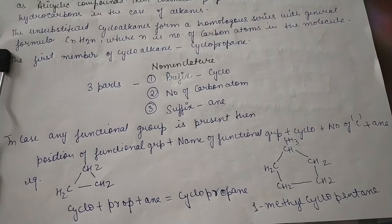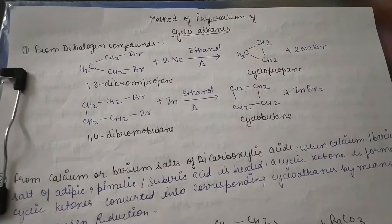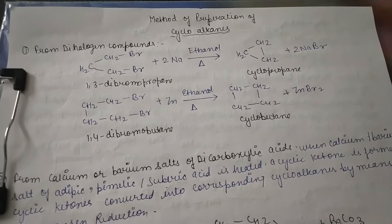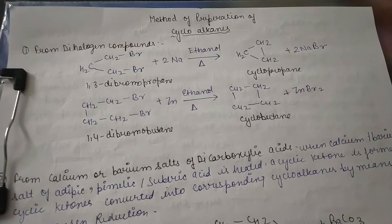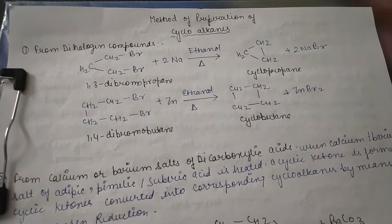In this way we can do nomenclature for various cycloalkane derivatives. Let's see the method of preparation of cycloalkane. In the syllabus, cyclopropane and cyclobutane are mentioned. The first synthesis is from dihalogen compounds. From 1,3-dibromopropane, cyclopropane is synthesized, and from 1,4-dibromobutane, cyclobutane is synthesized.